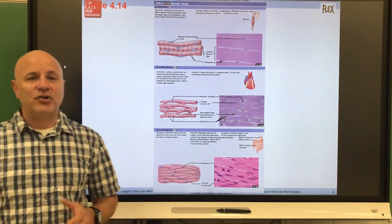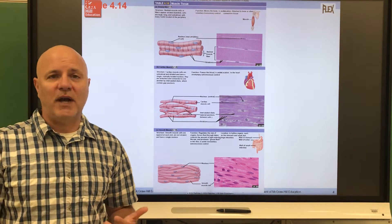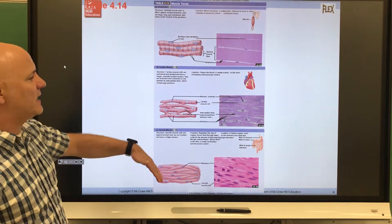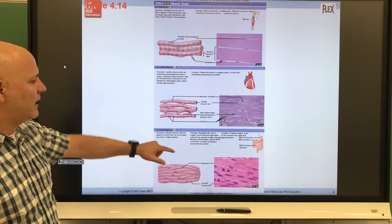Next is muscle tissue. The main function the muscle tissue has is it provides movement. So this is showing the three different types of muscle tissue we have: skeletal, cardiac, and smooth.